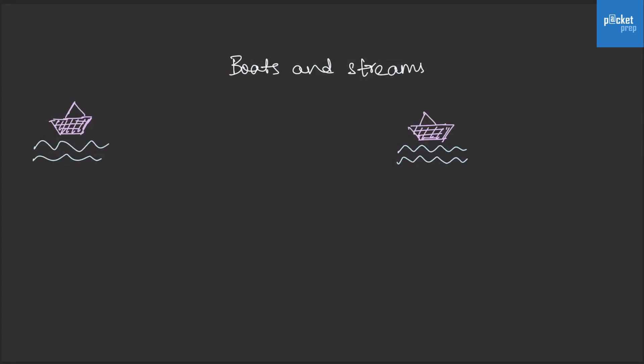Getting into boats and streams, let us first understand what upstream and downstream are. Let us assume that the boat is traveling in one direction and the stream in the opposite direction to that of the boat. If the stream and the boat are in opposite directions, it is known as upstream.